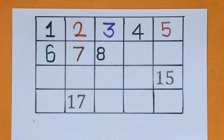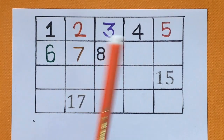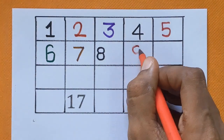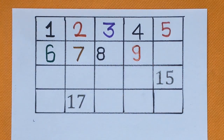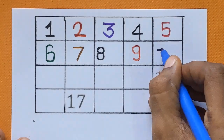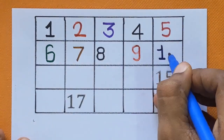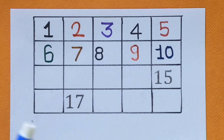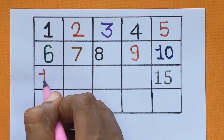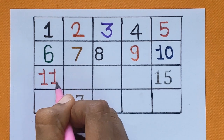Next is number 8. And after number 8, the next number is number 9. After number 9, which number comes? 10. 1, 0 — 10. Next is number 11. 1, 1 — 11.